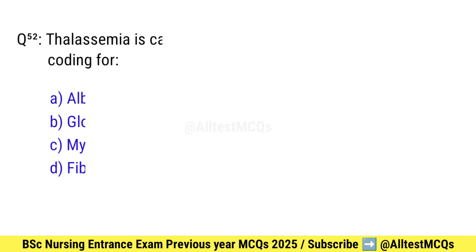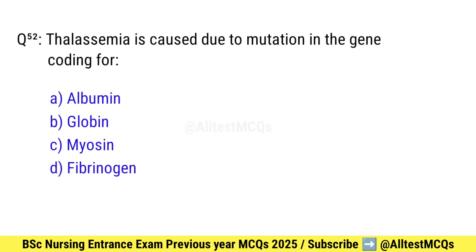Question number 52. Thalassemia is caused due to mutation in the gene coding for what? Correct option is B: Globin.